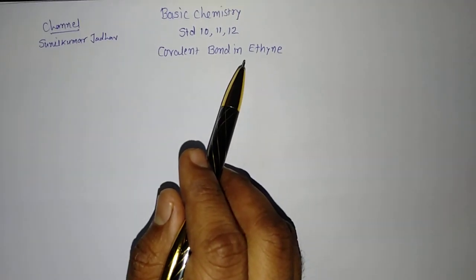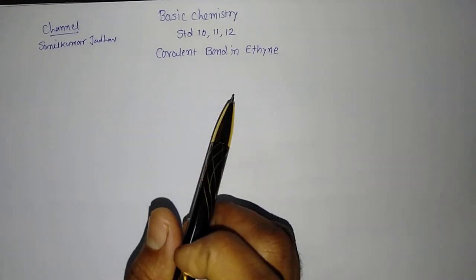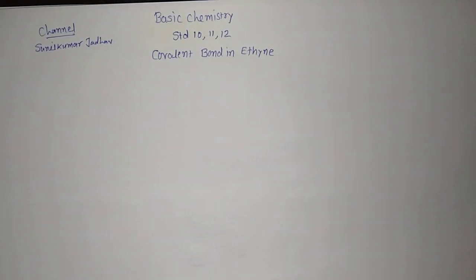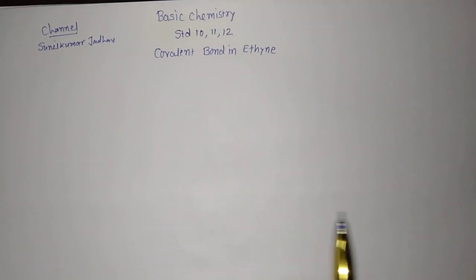Ethyne means carbon-carbon triple bond must be there between two carbon, that is what we can say hydrocarbon. So, here we are going to learn about ethyne molecule, so let us see how does it form.